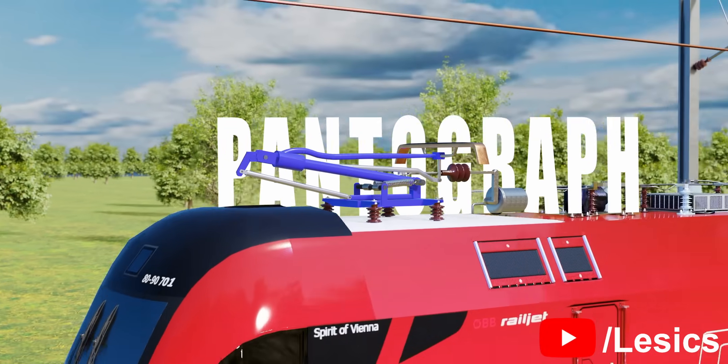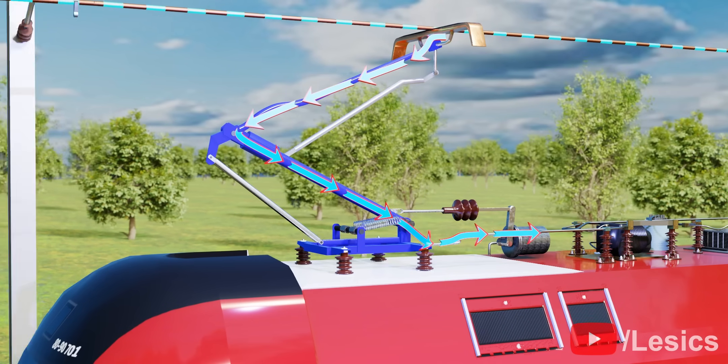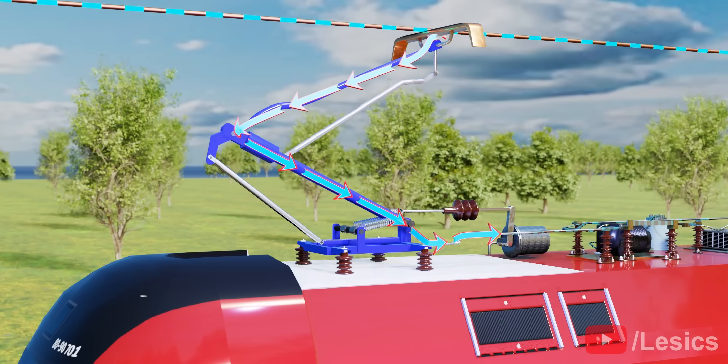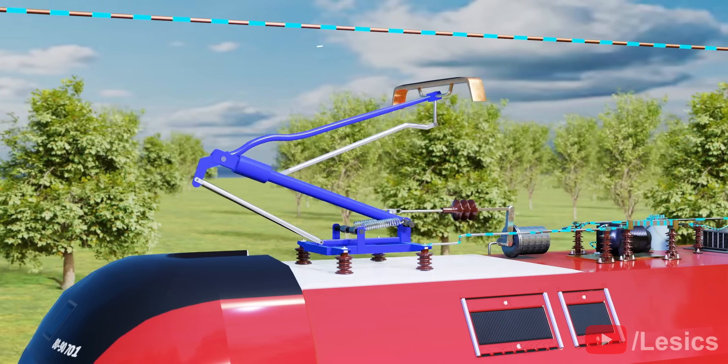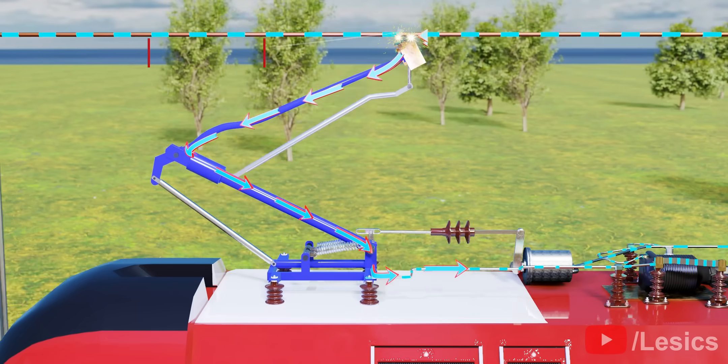Modern Z-shaped pantographs are marvels of engineering. You can see how seamlessly they unfold and collect power from the overhead lines. Watch what happens if the collector head is not horizontal during the folding and unfolding of the pantograph.